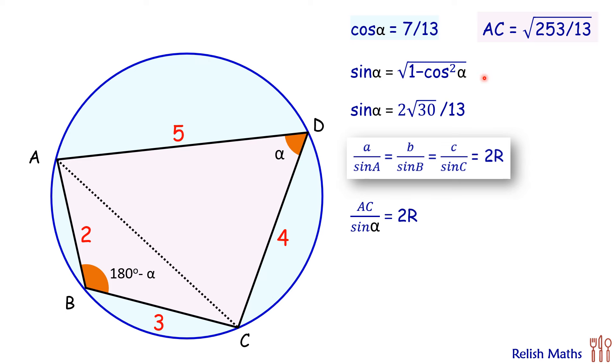Putting the values of AC as √(253/13) and sin α as 2√30/13, we'll get the value of 2R in this form. Simplifying, we'll get R = √3289/(4√30).